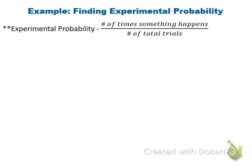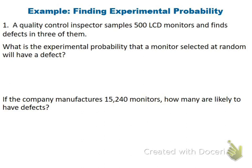Experimental probability is when we actually conduct an experiment. The numerator is the number of times we get what we want, and the denominator is the total number of trials. For the first problem, we sample 500 LCD monitors and find defects in three of them. That gives us three out of 500, which as a decimal is 0.006.